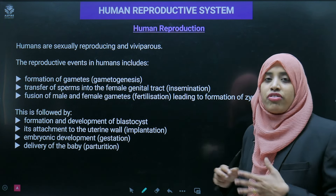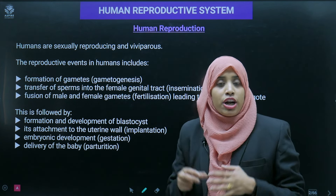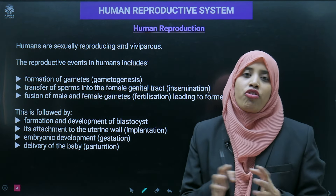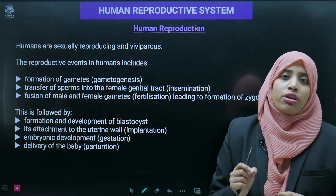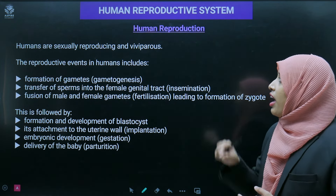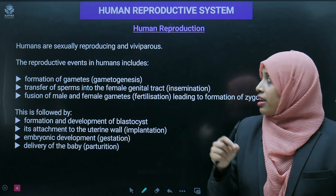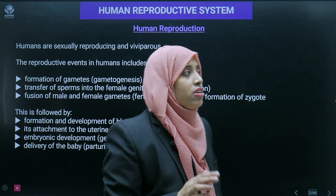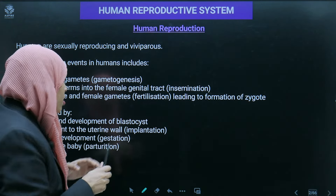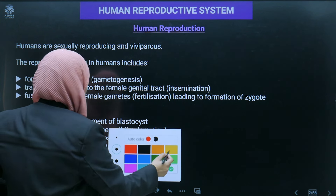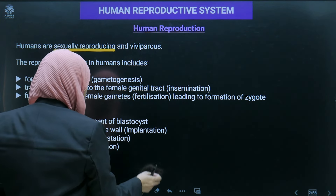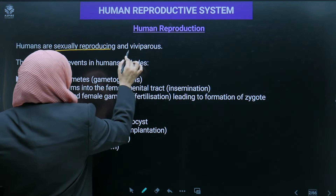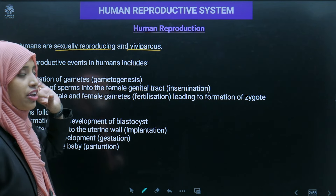When we talk about human reproduction, we know that human beings are sexually reproducing organisms. There is no way of asexual reproduction — only sexual reproduction occurs in humans. Humans are also viviparous, meaning they give birth to young ones.